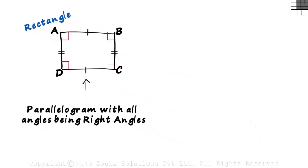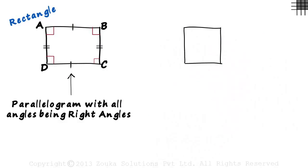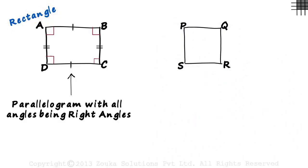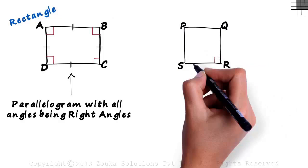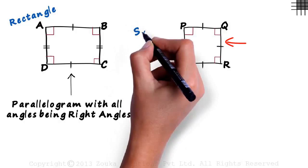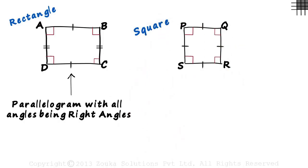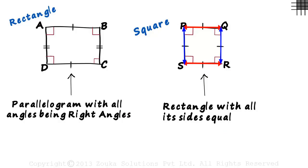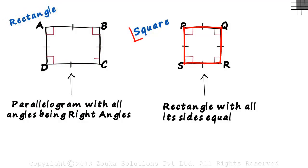Now it gets even more interesting. This quadrilateral is a special case of a rectangle — let's call it PQRS. Like the rectangle, all its angles are right angles, but it has an additional property: all its sides are equal to each other. This type of quadrilateral is called a square. Basically, it is a rectangle with all its sides equal. The rectangle is the special case of the parallelogram, and the square is a special case of a rectangle.